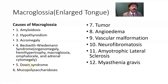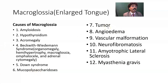Down syndrome — trisomy 21 — may be associated with macroglossia. Mucopolysaccharidosis, a metabolic disorder, can also cause it. Any tumor may be a cause: it may be lymphangioma, a tumor of the lymphatics, or it may be hemangioma, a tumor of the blood vessels.